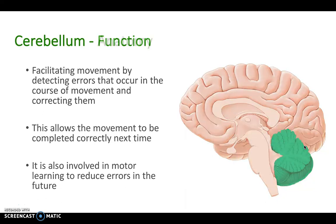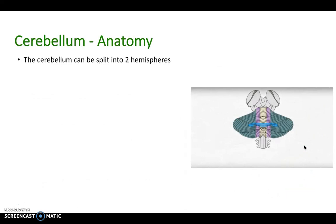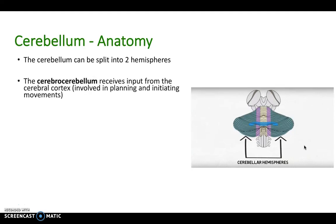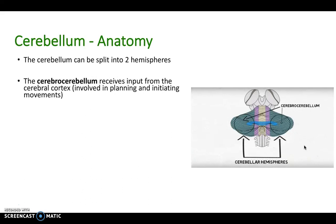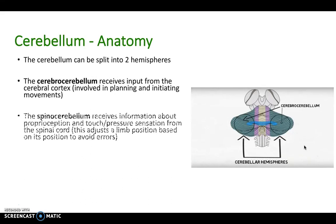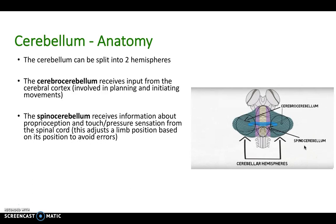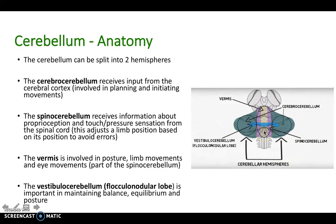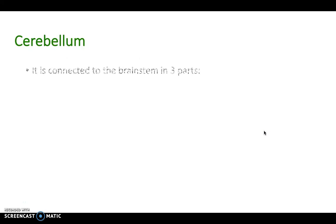The cerebellum is also involved in motor learning to reduce errors in the future. Functionally it can be split into two hemispheres. The cerebrocerebellum receives input from the cerebral cortex and is involved in planning and initiating movement. The spinocerebellum receives proprioception and pressure sensation from the spinal cord and adjusts limb position based on its position to avoid errors. The vermis runs down the middle and is involved in posture, limb movements, and eye movements. The vestibular cerebellum, or floccular nodular lobe, is important in maintaining balance, equilibrium, and posture.